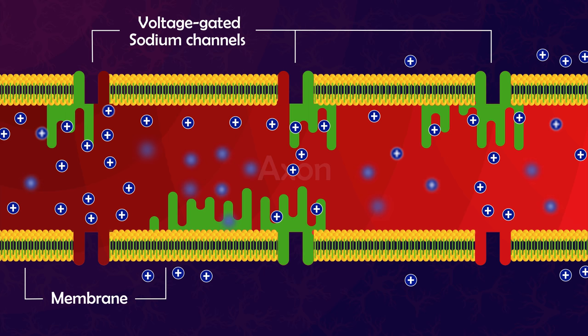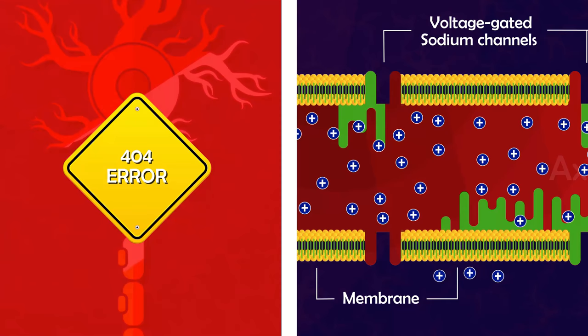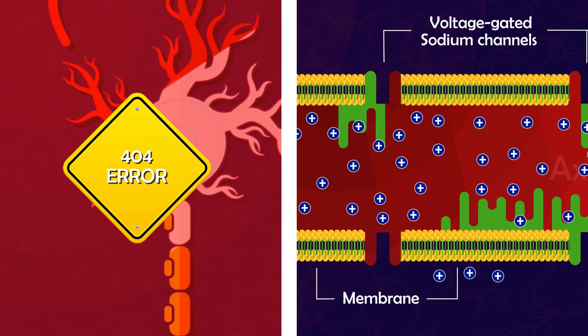Since the axon is depolarized, the nerve impulses cannot propagate, and hence, the brain cannot tell the rest of the body to do anything. Joey will become paralyzed and await death, likely by starvation.